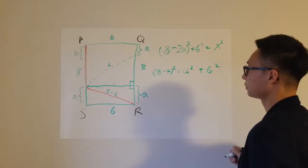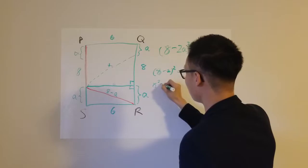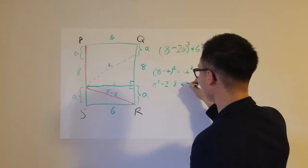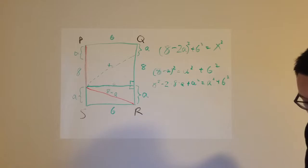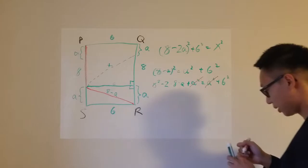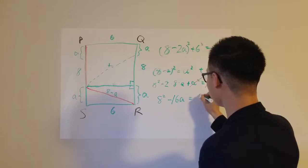So let's start solving this. So 8 minus a squared, if you remember the perfect square expansion, this should give you 8 squared minus 2 times 8 times a plus a squared. Then this side, you'll have a squared plus 6 squared. Right off the bat, you can cross off this annoying a squared term.